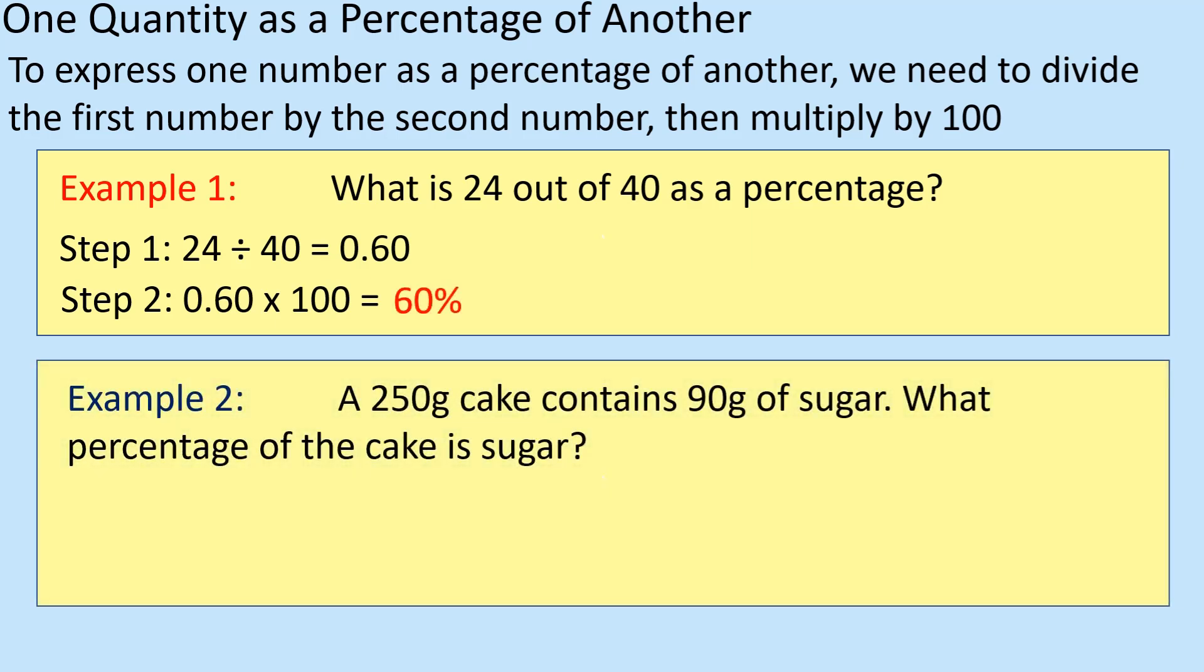Alright, so 250 grams of cake contains 90 grams of sugar, what percentage of the cake is sugar? So it's going to be 90 out of 250, isn't it? Alright, so 90 divided by 250, times it by 100. And there you go, 36%. Alright, really, really kind of straightforward stuff.